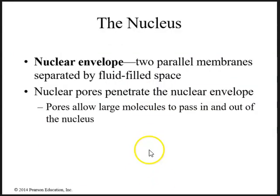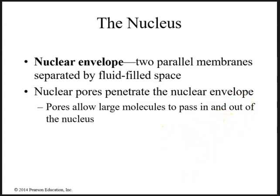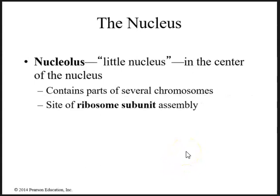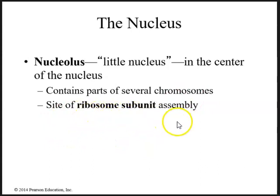The nucleus is surrounded by the nuclear envelope — two parallel membranes separated by a fluid-filled space. Nuclear pores penetrate the nuclear envelope, which allow large molecules to pass in and out of the nucleus. Within the nucleus we have the nucleolus — also known as the little nucleus — which contains parts of several chromosomes and is the site of ribosome subunit assembly.